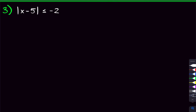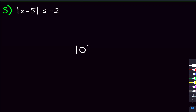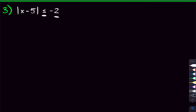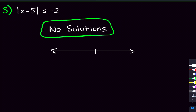Moving on to problem three, this one probably looks simpler because the absolute value is already by itself. But if you look closely, you'll see a problem — it's saying the absolute value of something can be less than or equal to a negative number. That can't happen. The absolute value of something can only be zero or a positive number. It cannot be less than or equal to a negative number, so here there are actually no solutions. On the number line, you can mark zero but you're not shading anything — no closed circles, no open circles. In interval notation, you just use the empty set symbol, the circle with a line through it.